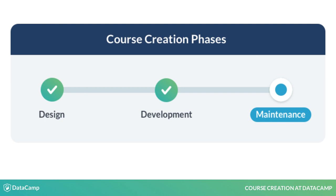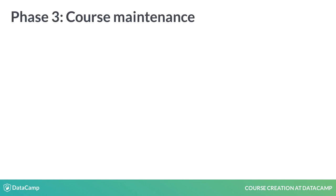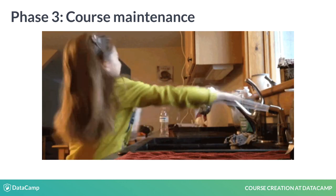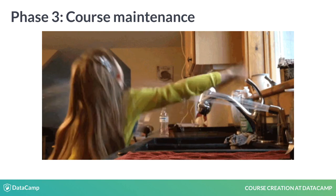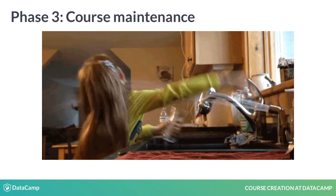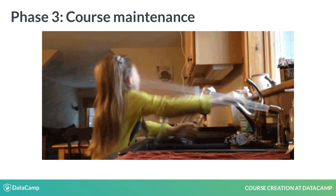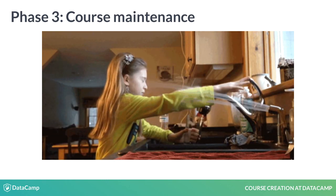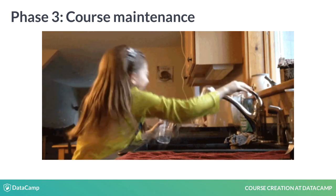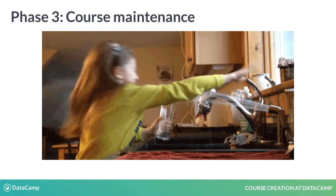Now that your house is built and the owners have moved in, you'll need to keep an eye on it. The final phase of course creation is course maintenance, and it continues as long as your course is live on our platform. While you took all the necessary precautions to build the best house possible, sometimes things break over time — like a leaky faucet. Just like you'd want to fix that faucet, you'll want to monitor your course and ensure you're able to address issues as they arise. This can mean anything from fixing a typo to updating packages, all to ensure a continued positive and effective learner experience.